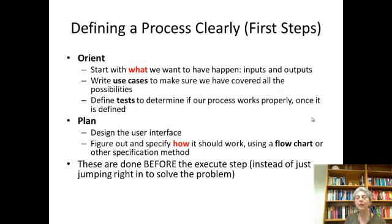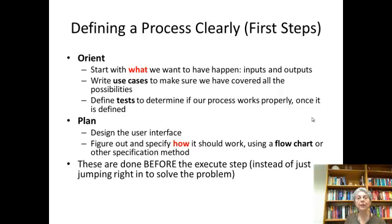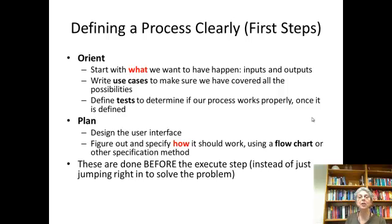The first couple steps of defining a process include starting with orienting — saying what you want to have happen, talking about inputs and outputs. We're going to write use cases to make sure we cover all the possibilities and define tests to make sure everything works properly. Then comes the planning phase, which is designing the user interface and specifying how things should work. We'll use flowcharts for this. Both of these major stages are done before you get to the implementation.